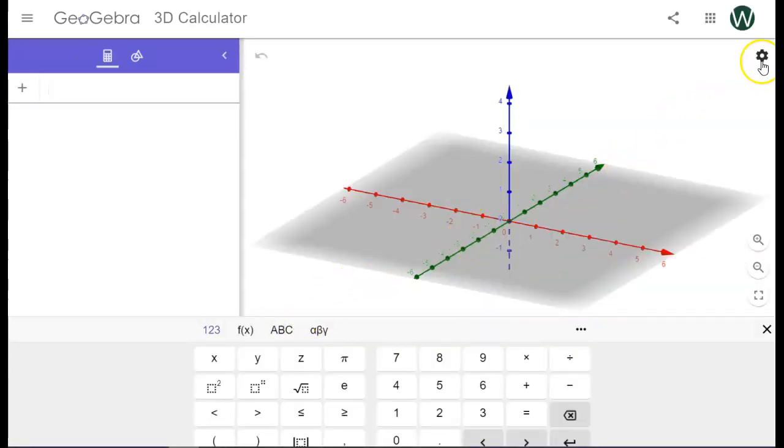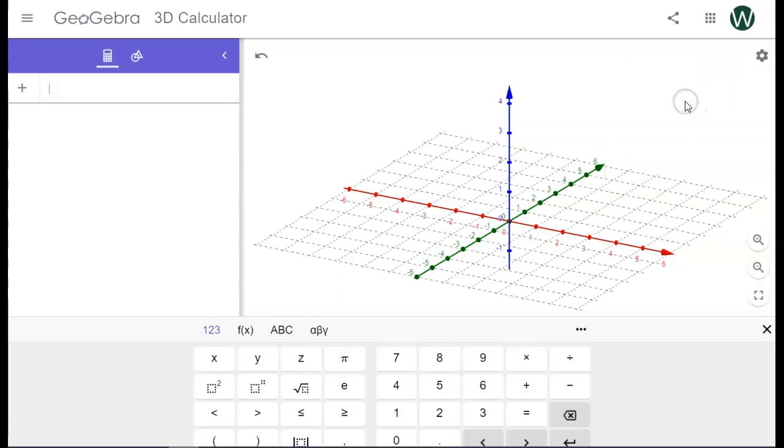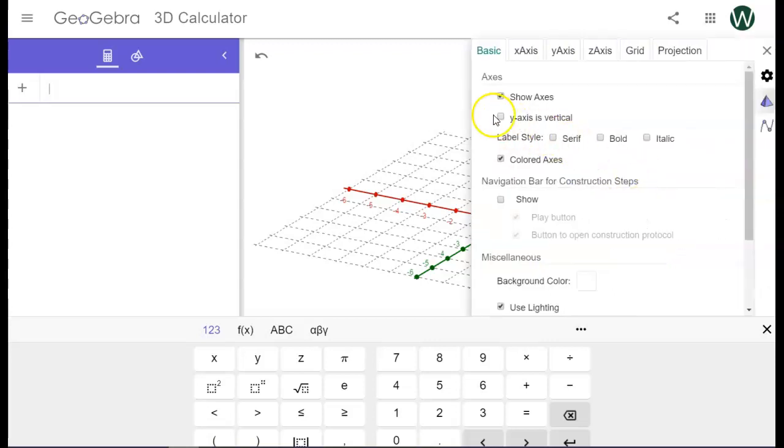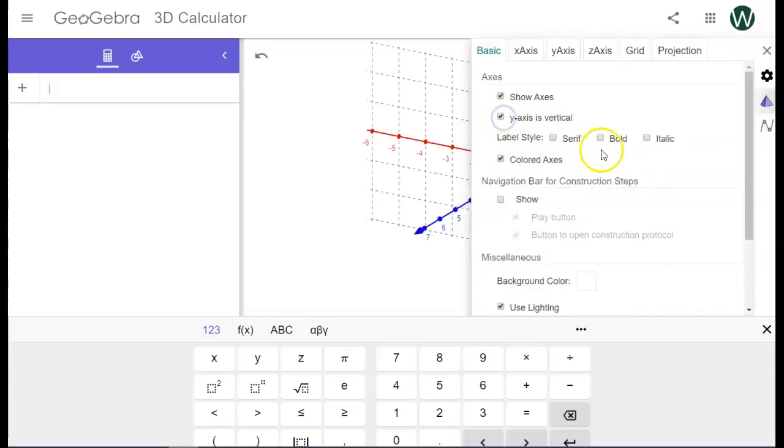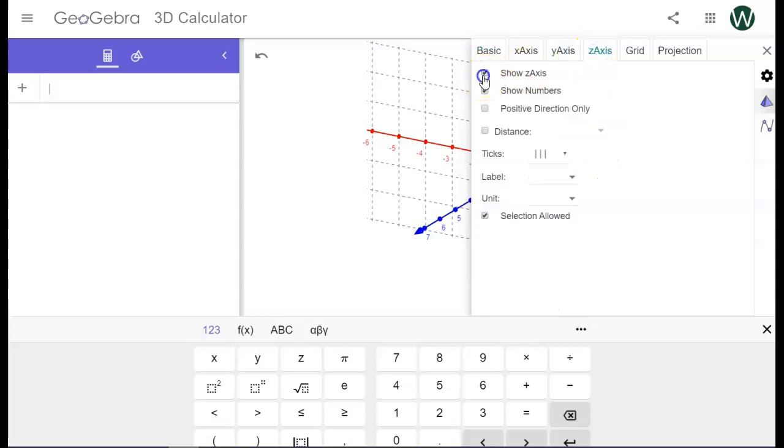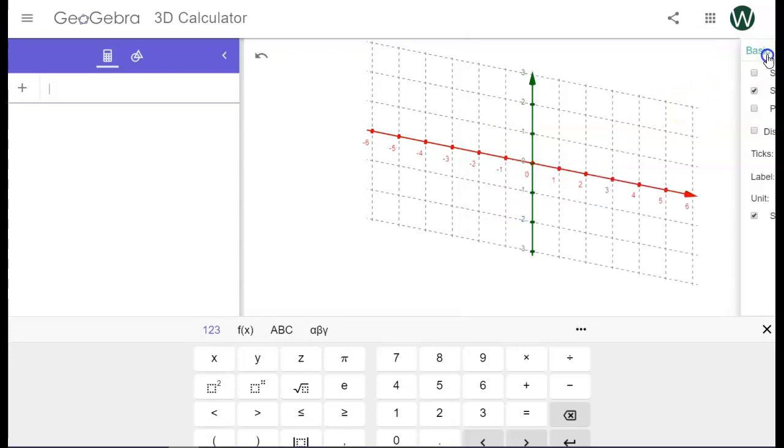Before I do anything, I'm going to go to settings. And this is just personal stuff. I'm going to take off the plane. I'm going to show the grid. And then under the settings right here, I'm going to make the y-axis vertical. That's what my students are used to seeing. And I'm going to take off the z-axis. Like I said, these are just personal preferences.